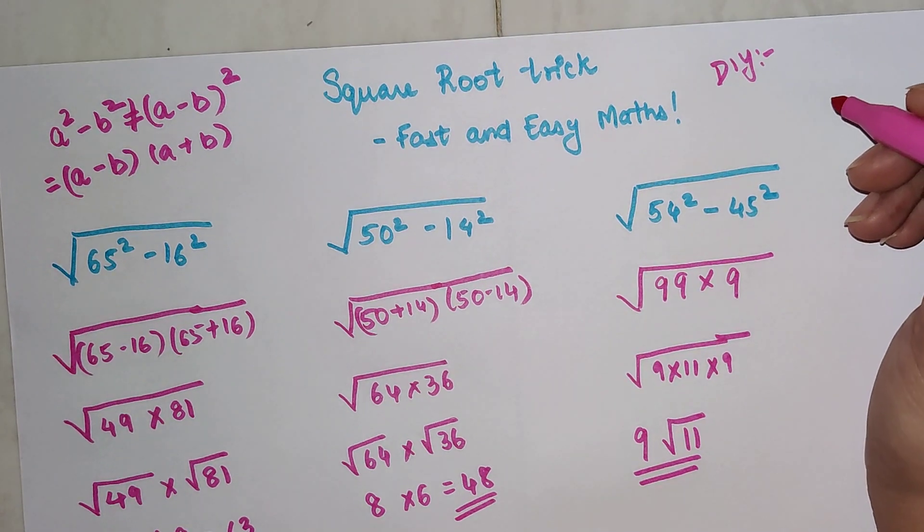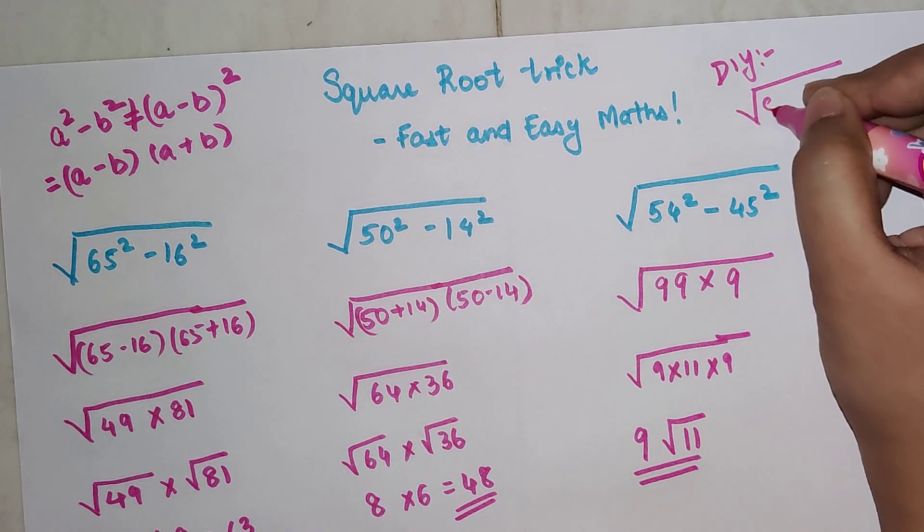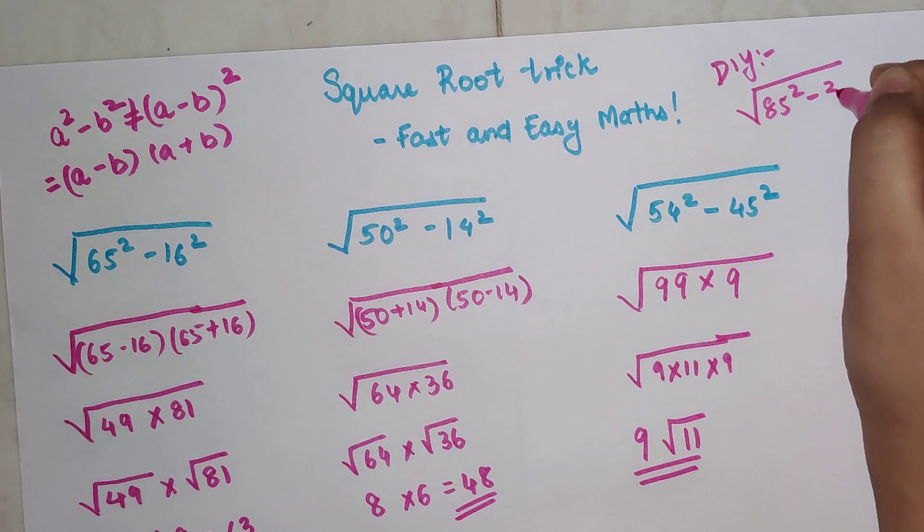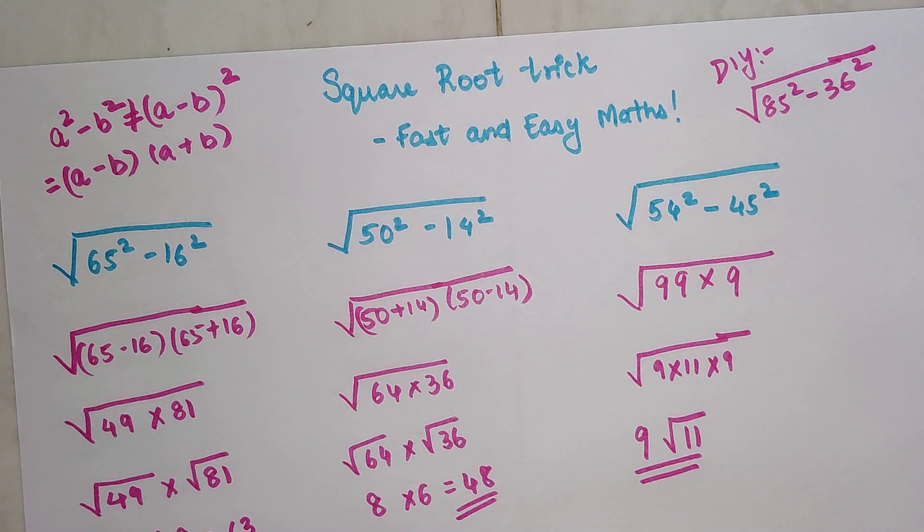Now, what will be the answer of √(85² - 36²)? Do let me know your answers in the comment section.